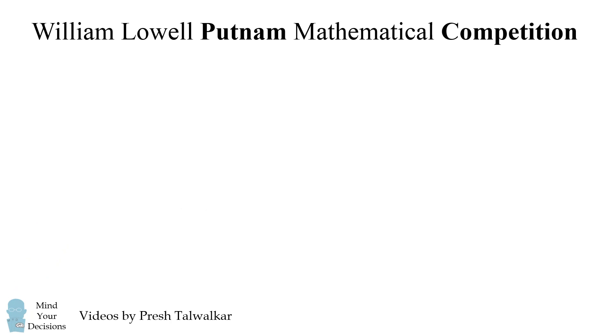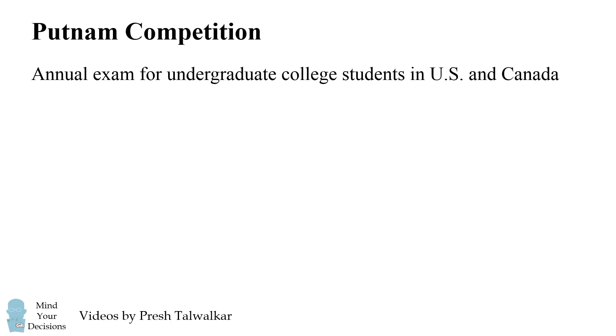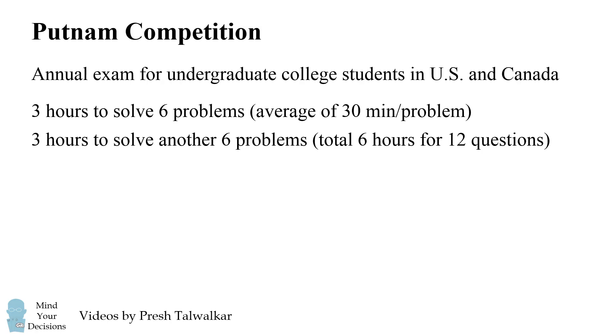The William Lowell Putnam Mathematical Competition, or more commonly called the Putnam Competition, is an annual exam for undergraduate college students in the United States and Canada. You have three hours to solve six problems, and then another three hours to solve another six problems. That's a total of six hours for 12 questions, or an average of 30 minutes per problem.